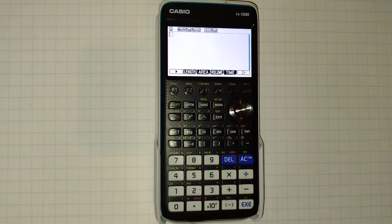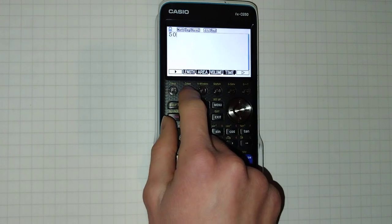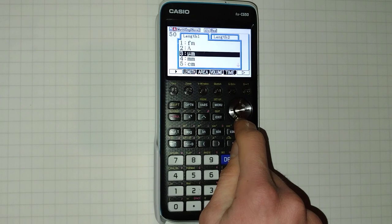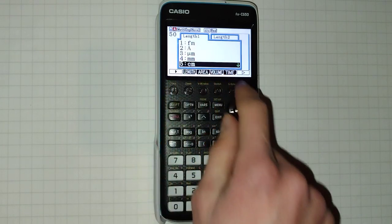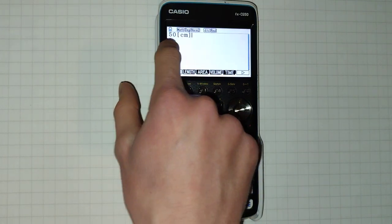Let's say we want to convert centimeters to meters so we're going to type in 50 and then we're going to type F2 and this brings us to this menu. Using the down arrow we can get to centimeters and then click execute. This now means 50 centimeters.